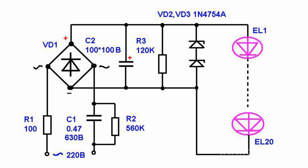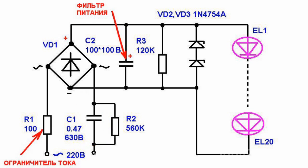Capacitor C1 serves as a capacitance ballast. This capacitance is rated in such a way that a current of 20 mA flows through the LEDs. C2 filters and smooths ripple, and resistor R1 is used to restrict current. Resistors R2 and R3 are designed to discharge capacitors C1 and C2 after the power supply is turned off.